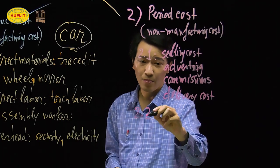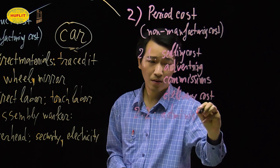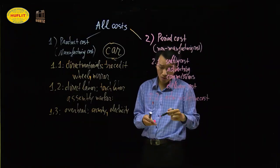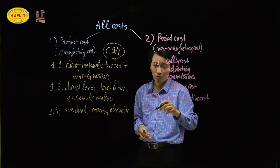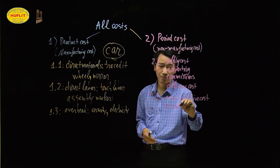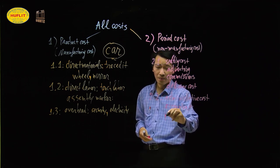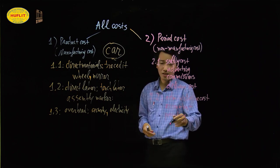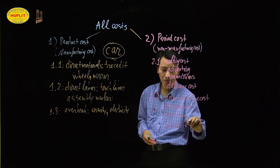The second type of cost inside period cost is administrative cost. Administrative cost is a general cost for running the office or headquarter building — for example, the salary paid to the accountant to do the paperwork, the cost of printing paper to issue invoices, and electricity to run the office.